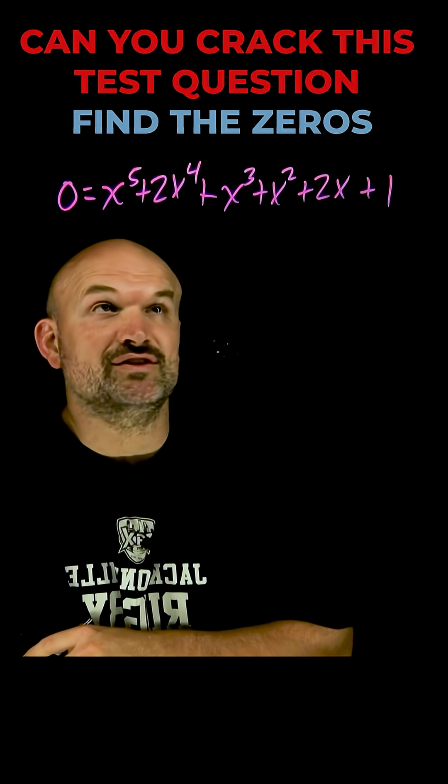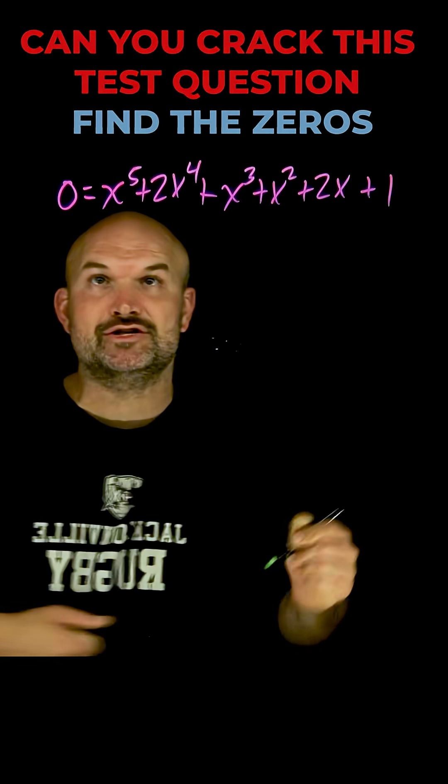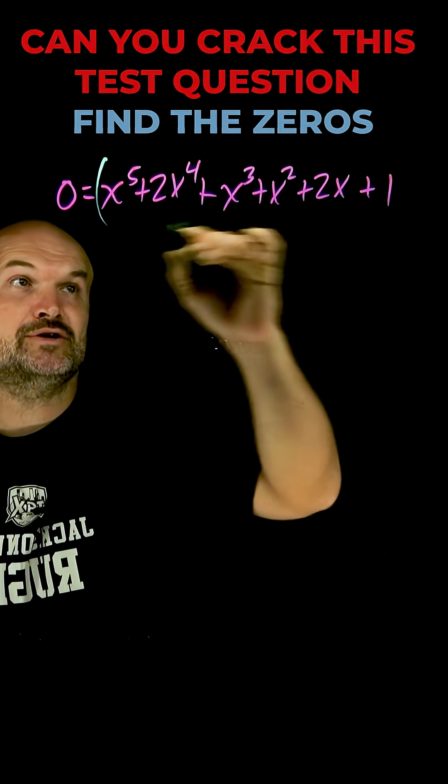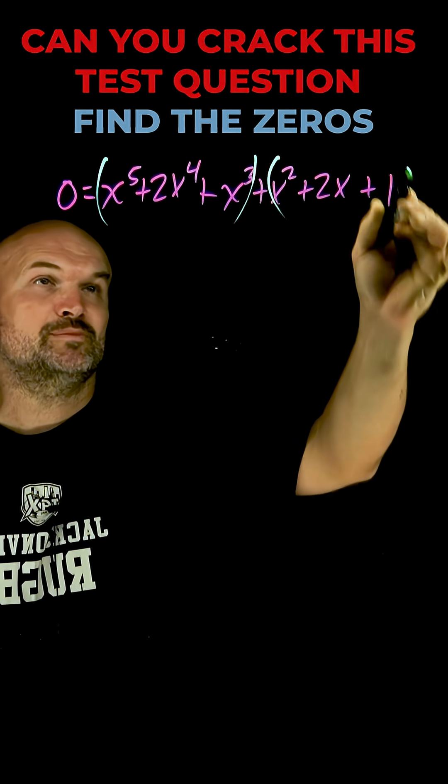Alright, the easiest way to find all the zeros of this polynomial by factoring is to use the grouping technique. What I'm going to do is group the first three terms and group the last three terms.